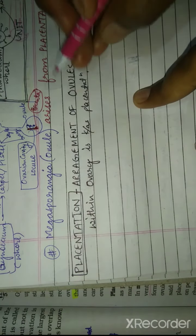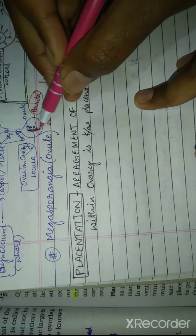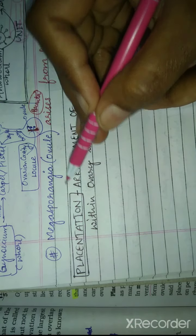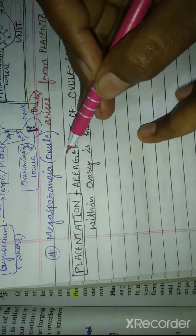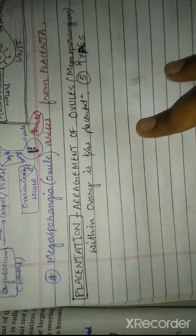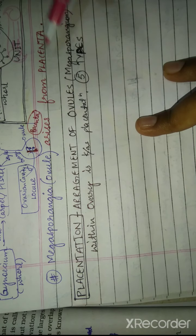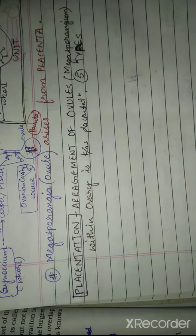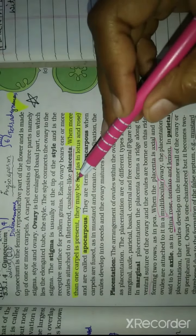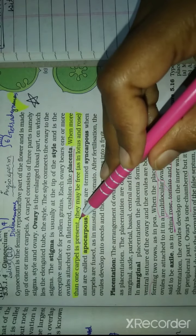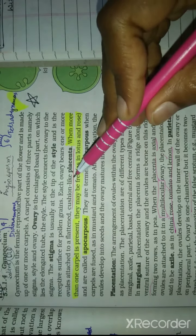We call ovules megasporangia. Where does the ovule arise from? From the placenta. It is cushion-like. Each ovary bears one or more ovules attached to a flattened cushion-like placenta.